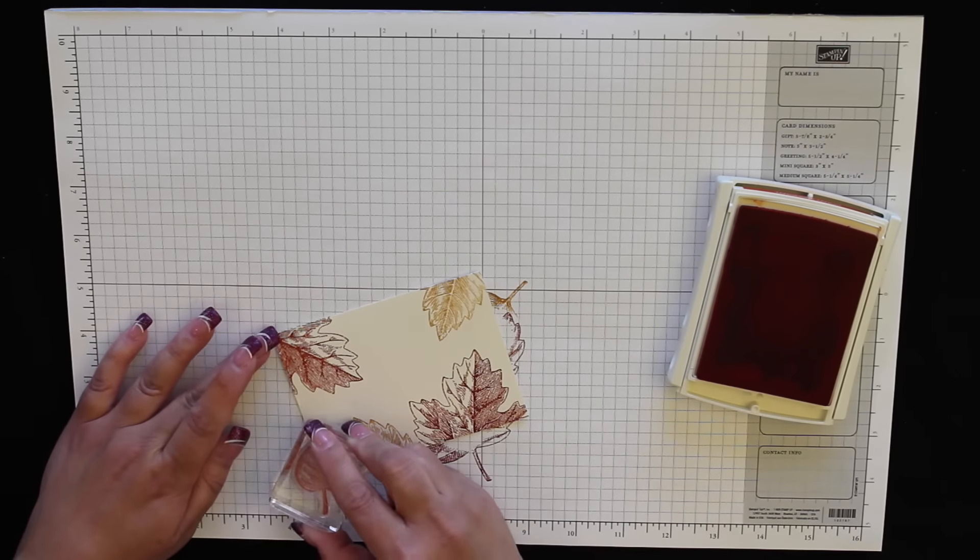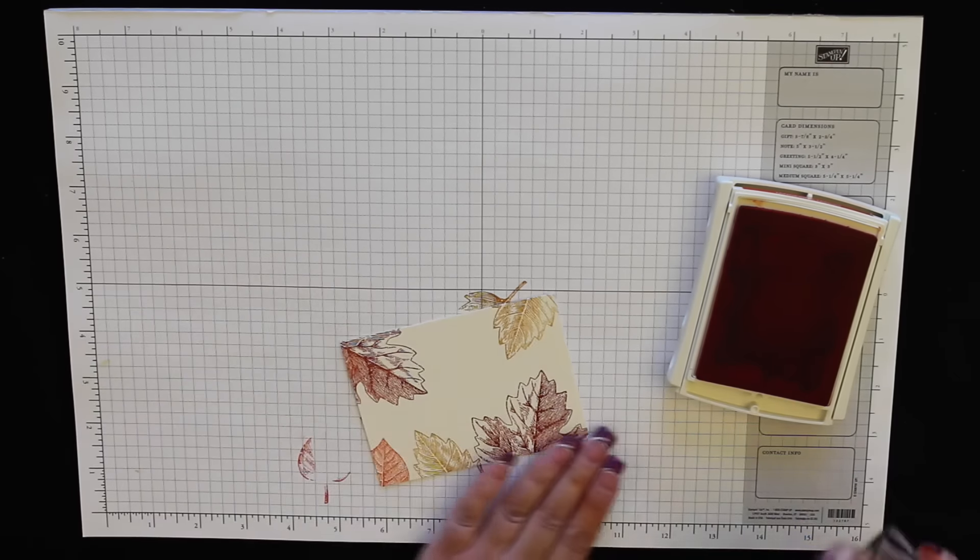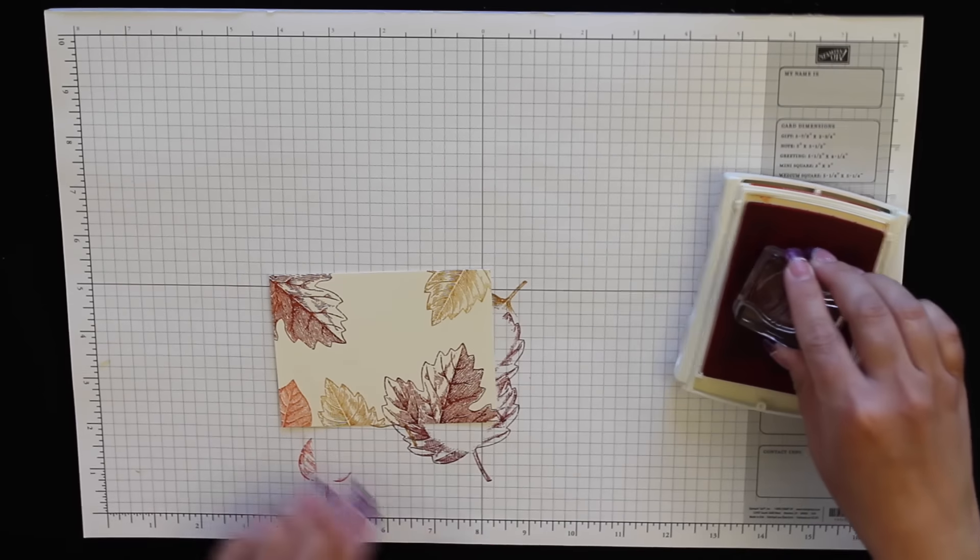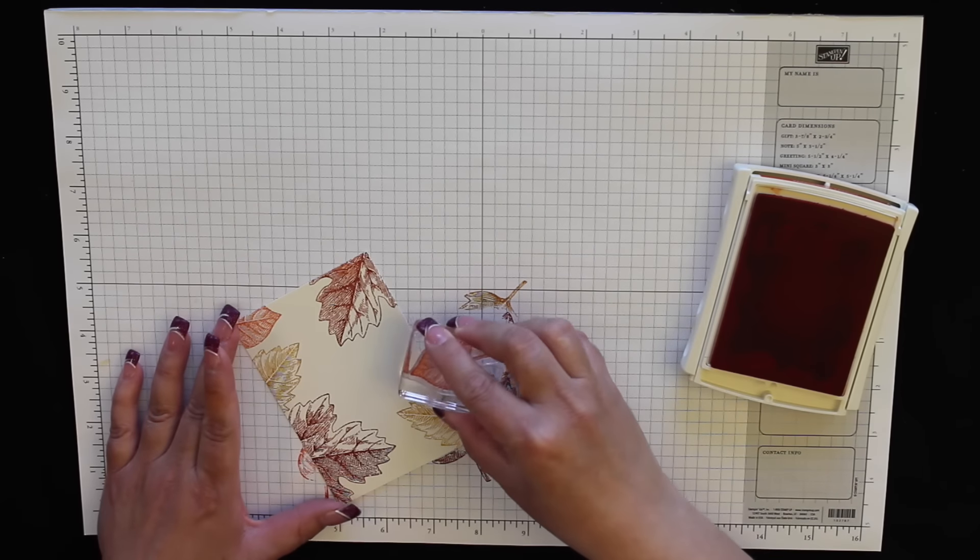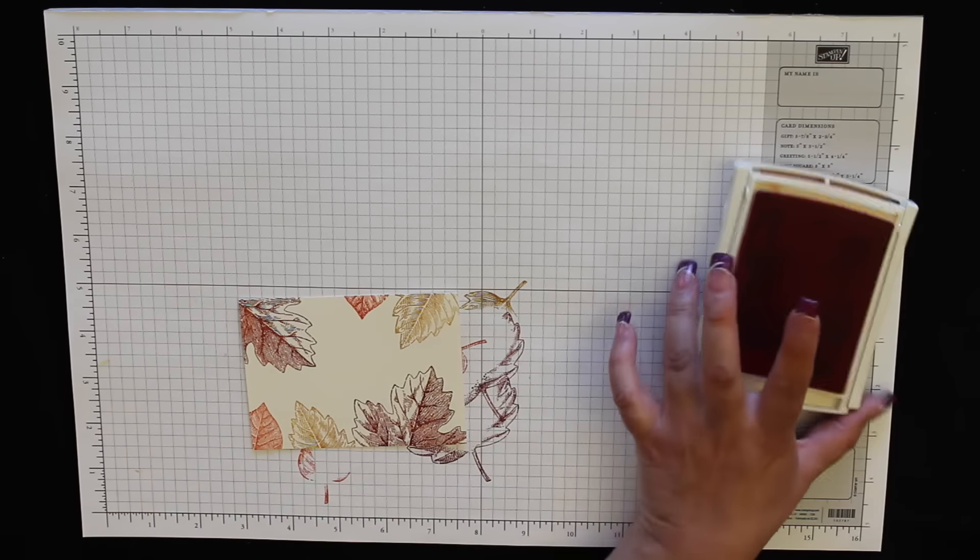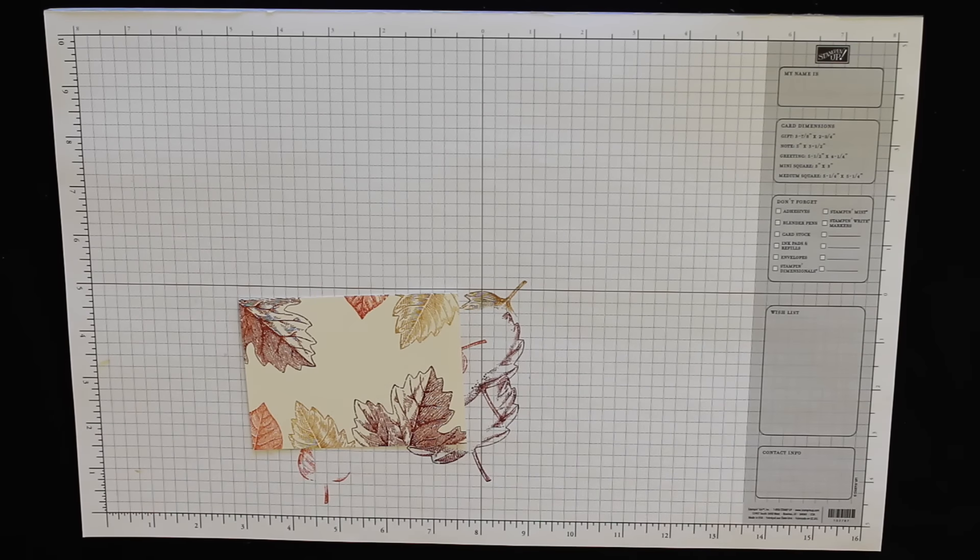Okay, next I have Tangerine Tango. I'm going to put, oops, got a smudge right there, didn't even realize that. Okay, we'll just go ahead and cover it up with the leaf, you can't even tell that's there. We'll put a hint of one peeking out right here.